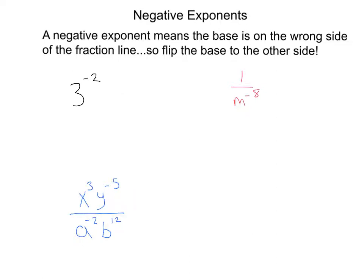Since I'm a positive person, you know I don't like negative exponents. When you have a negative exponent, all that means is that the base is on the wrong side of the fraction line. So flip the base to the other side.